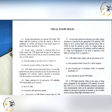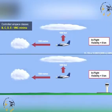VFR, as the constituent words 'visual flight rules' make clear, is a set of rules governing the conduct of a flight. Whereas VMC, visual meteorological conditions, as the constituent words make clear, are minimum conditions of in-flight visibility and the separation of an aircraft from cloud both horizontally and vertically.